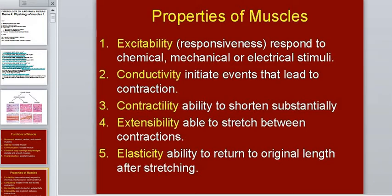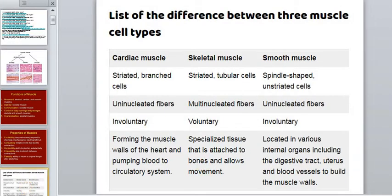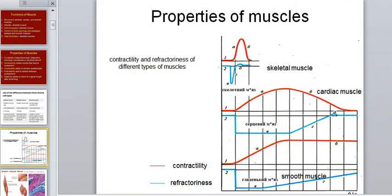For all muscle tissues, we have some properties: excitability, conductivity, contractility, extensibility, and elasticity, as shown on this slide. This slide shows the general differences in muscle tissues. I want to note the ability of cardiac and smooth muscle — cardiomyocytes can contract involuntarily — while for skeletal muscle, only voluntary contraction is possible.